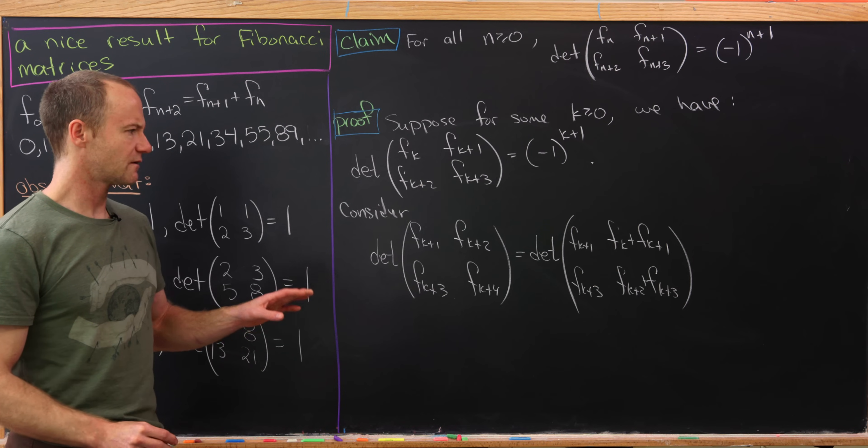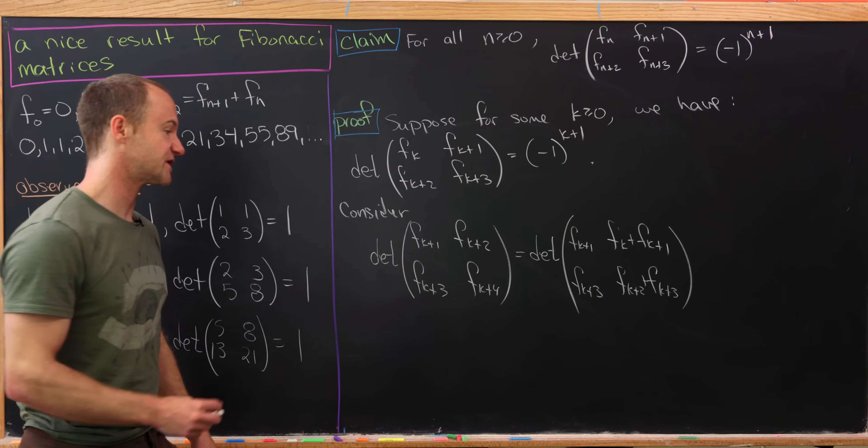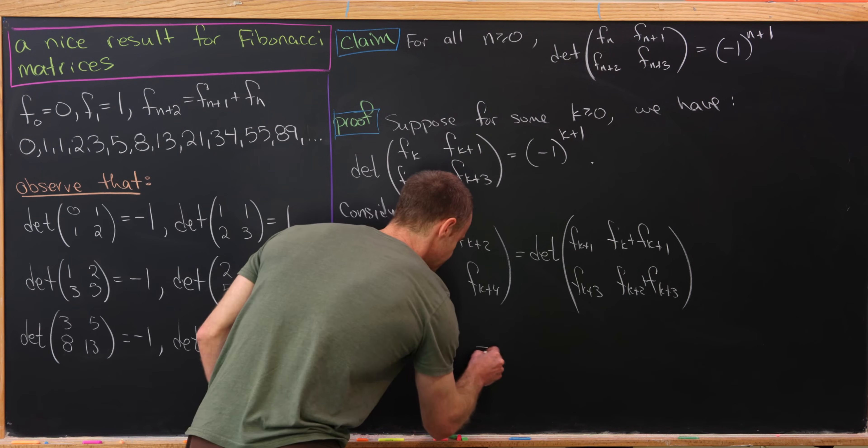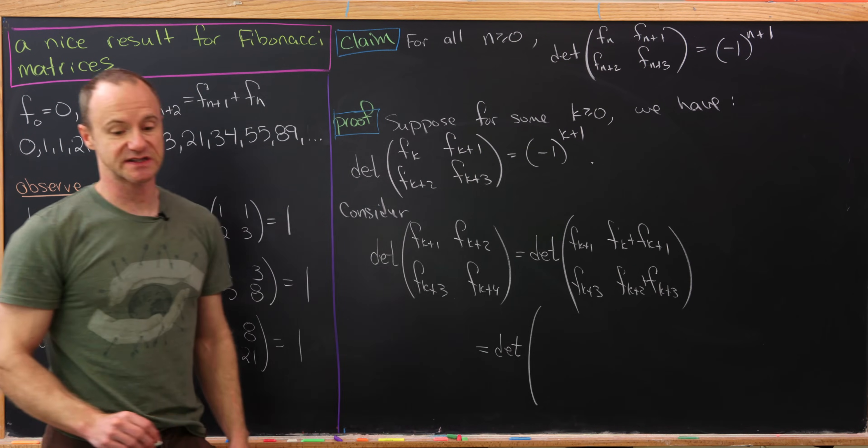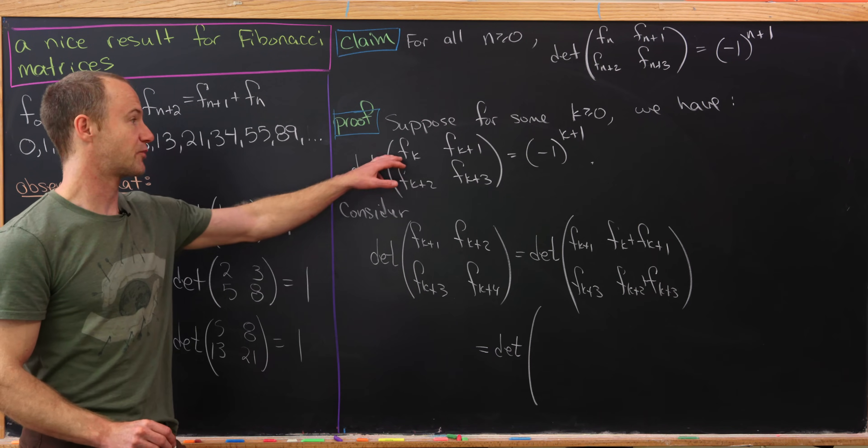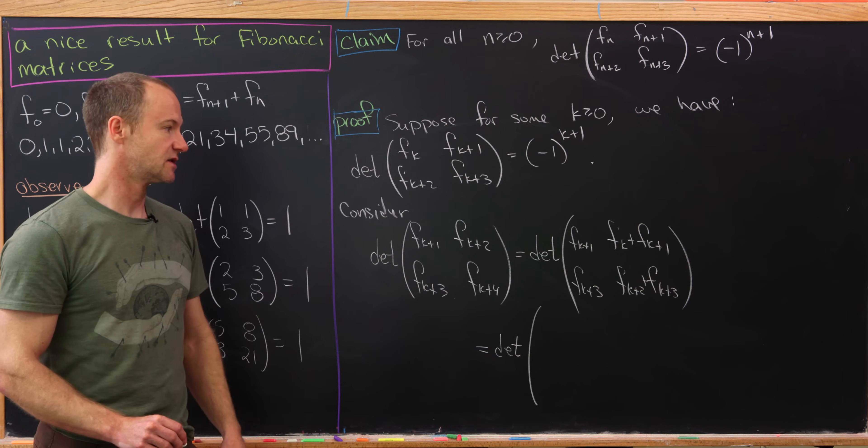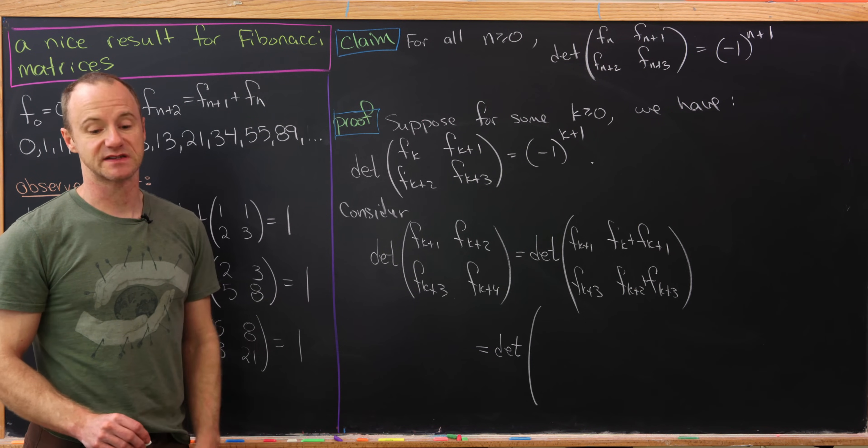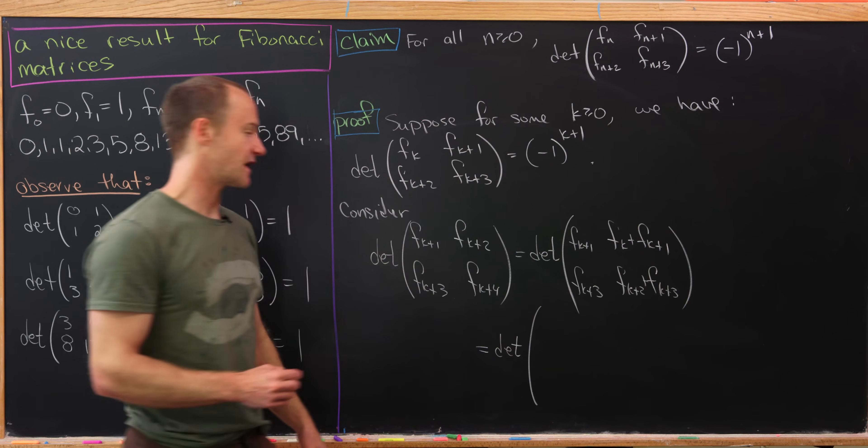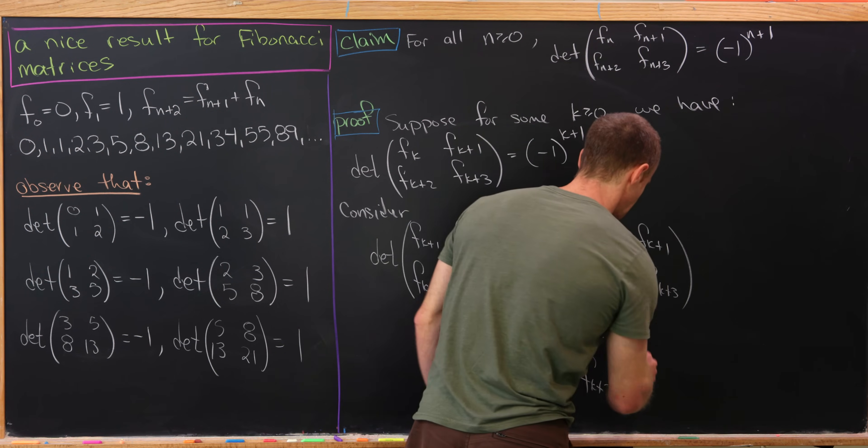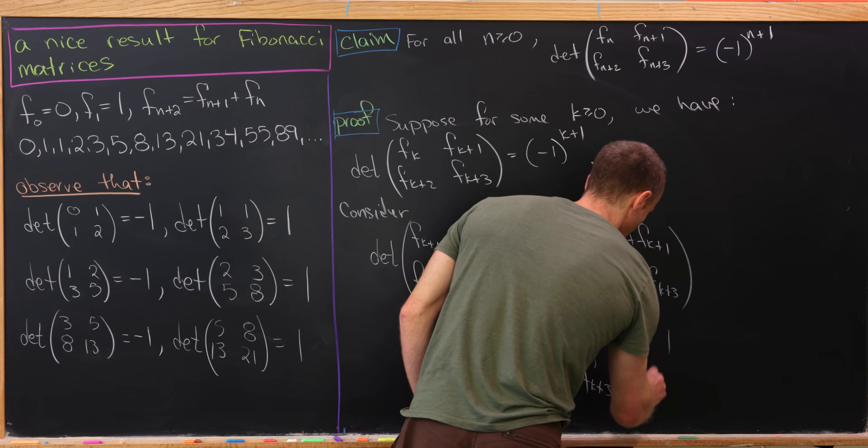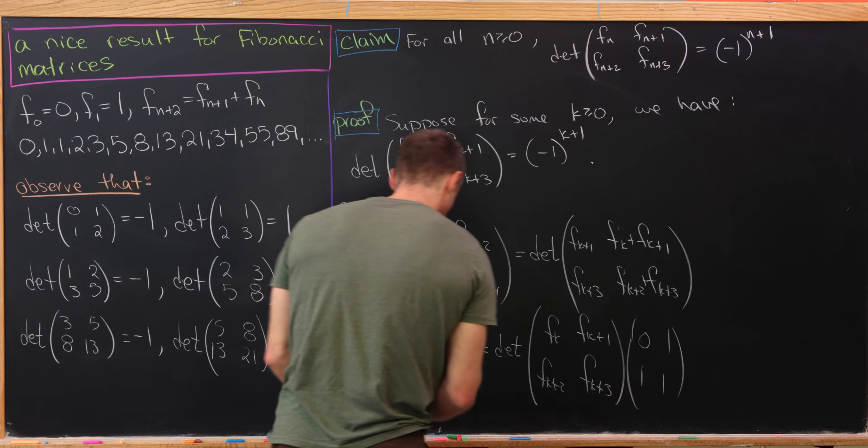But now let's notice that writing the matrix like that, there's an obvious factorization of this matrix. So note that this matrix can be factored as the previous matrix times something. So let's write that down. So it's going to be the previous matrix, so we'll just copy that, times this matrix, which is 0, 1, 1, 1. Okay, nice.